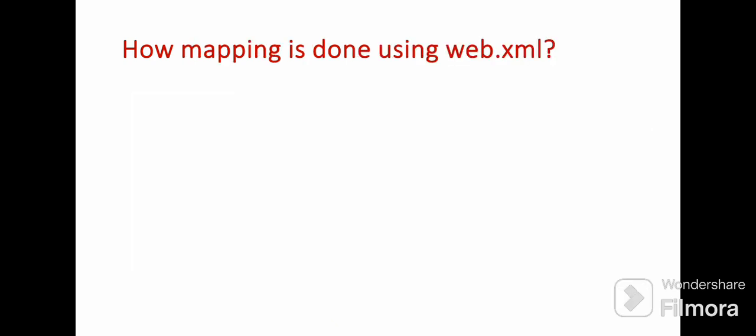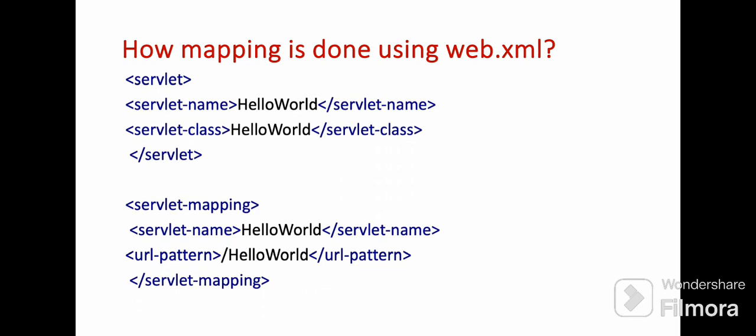Now let's see how mapping is done using web.xml. Here we have two tags: servlet and servlet-mapping. Inside servlet there is servlet-name and servlet-class — this is the name of the servlet and its class. Inside servlet-mapping we have servlet-name and URL pattern. This is the name of the servlet and the URL of the respective servlet. Based on this, when the client sends a request, it will be mapped to the respective servlet program.